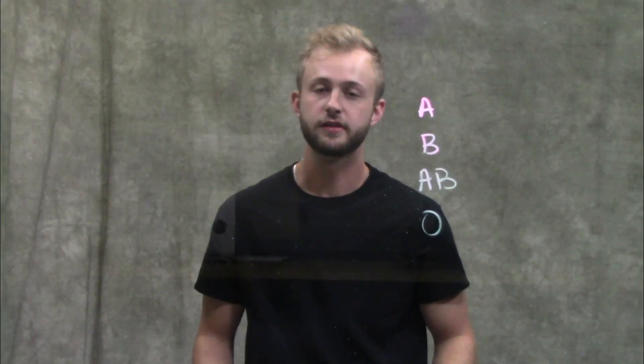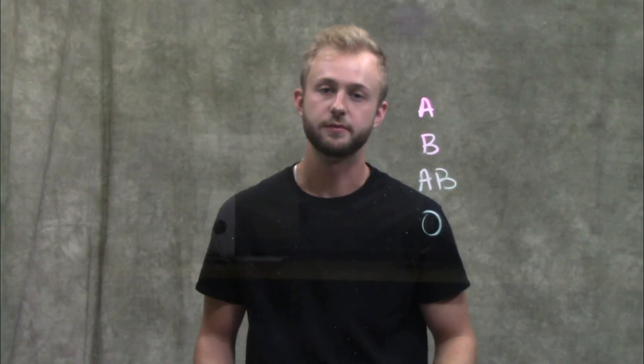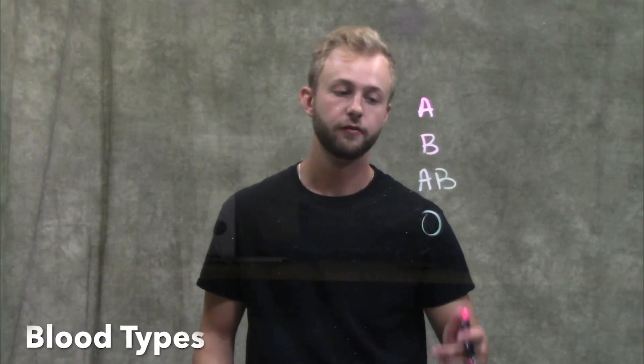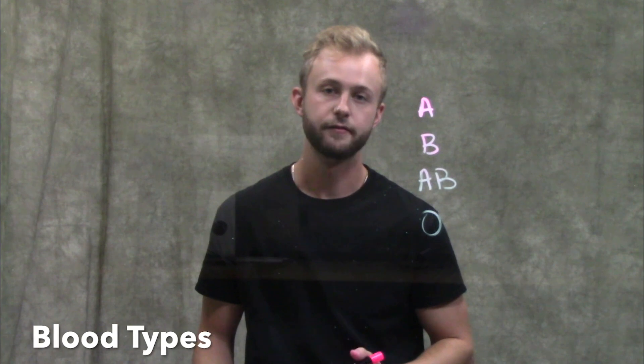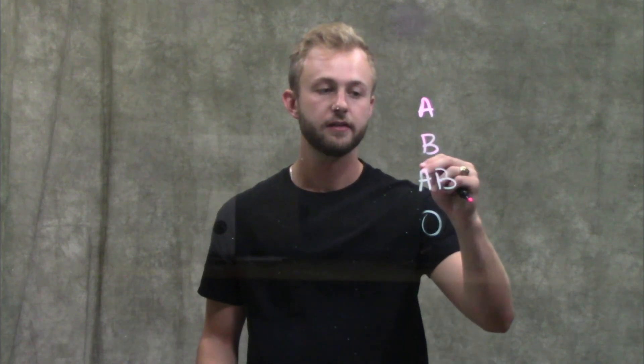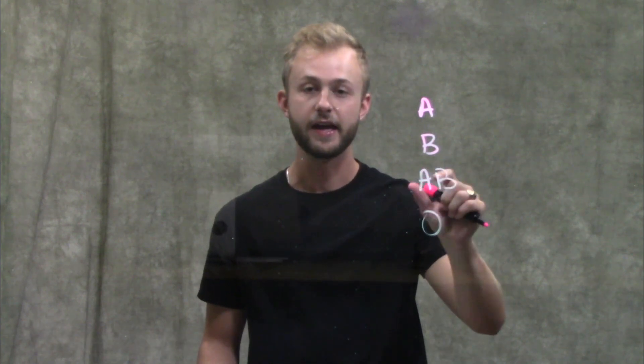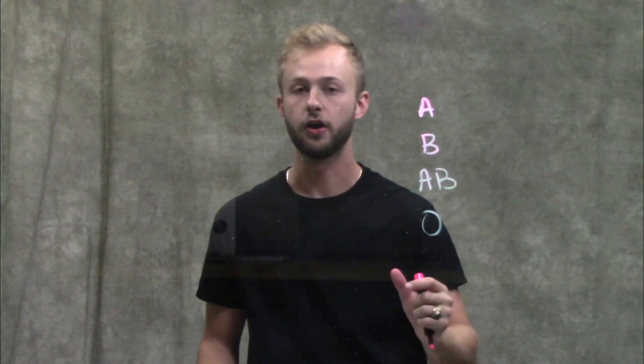This video is going to be about blood types. There are four different blood types that an individual can have: A, B, AB, or O.